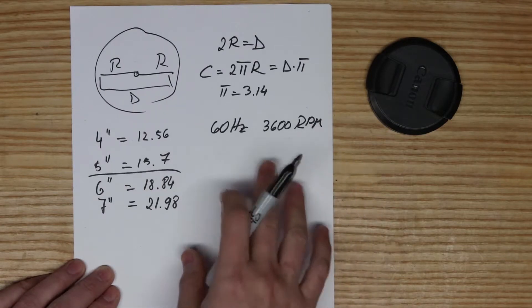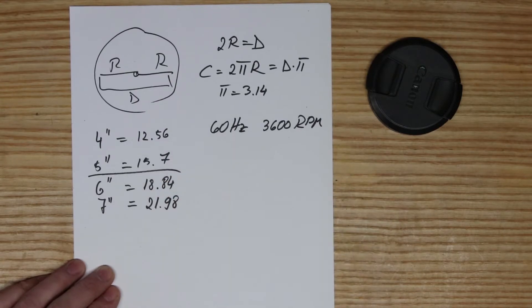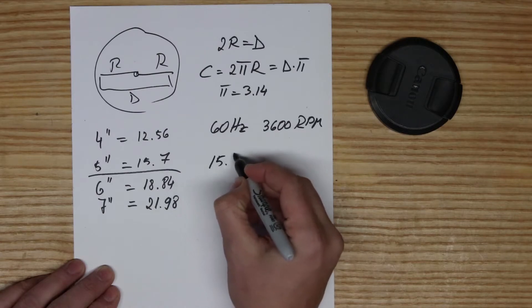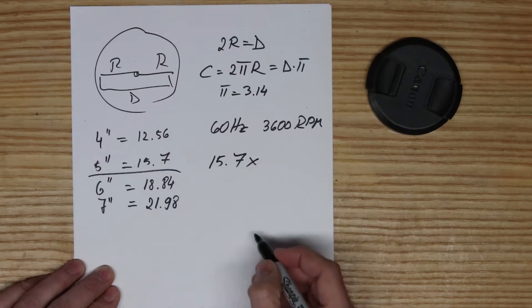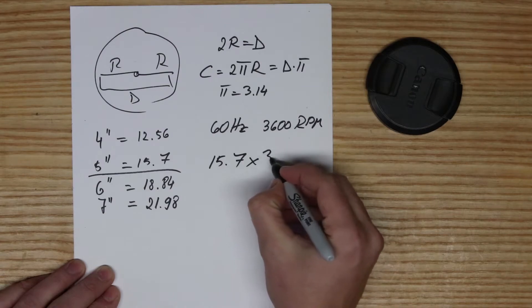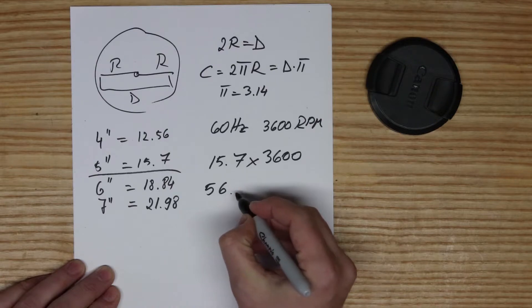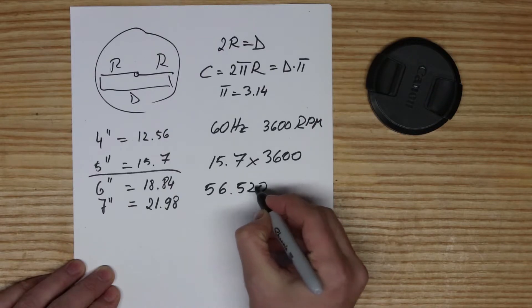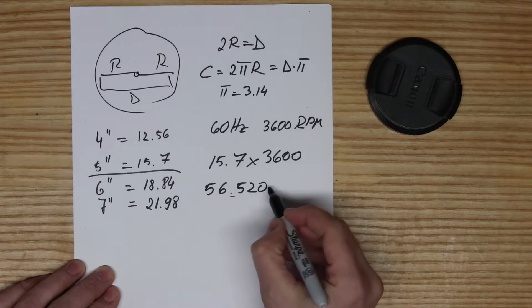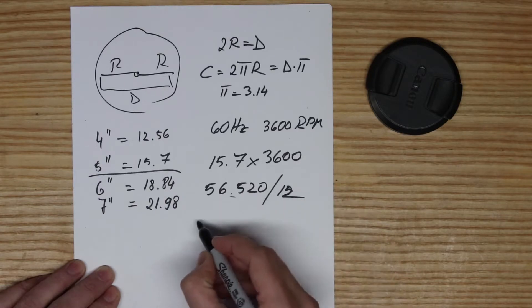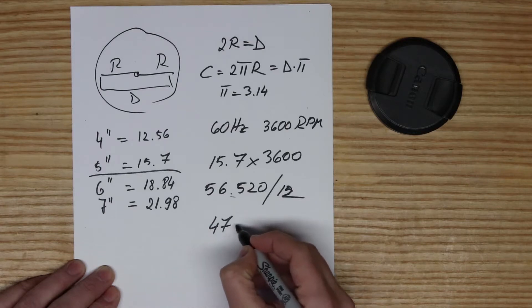Your motor, in North America, 60 hertz, 3,600 RPMs. At 60 hertz at full speed, your motor will run 15.7 multiplied by 3,600, puts you at 56,520, and this would be inches. If you divide this by 12, you will end up with 47.10.